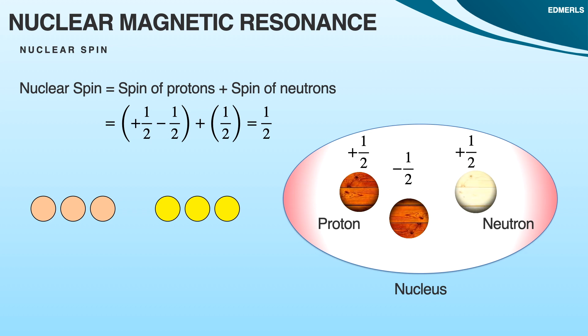Opposite spin of protons of the same energy can cancel each other, and opposite spin of neutrons can cancel the spin of neutrons only. While the opposite spin of protons cannot cancel opposite spin of neutrons.